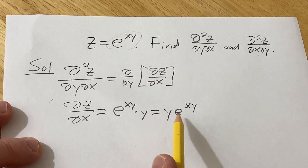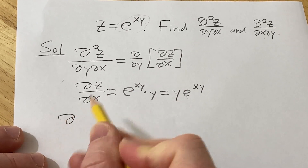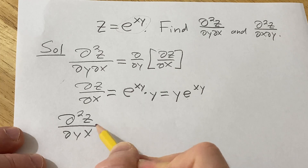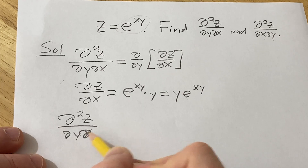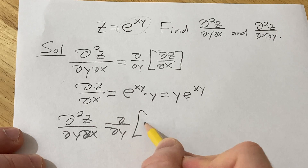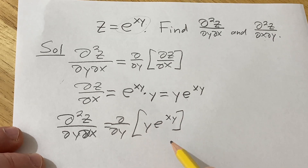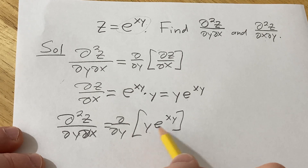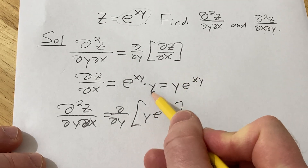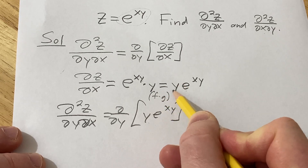So now we take the derivative of this with respect to y. It's the partial with respect to y of y times e to the xy. To do this, we're going to use the product rule. Recall if you have two functions f and g, and you multiply them and take the derivative, think of f as your first function and g as your second.